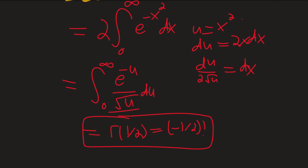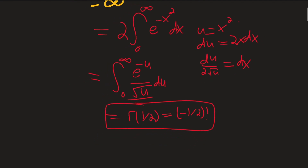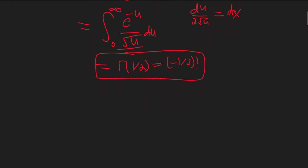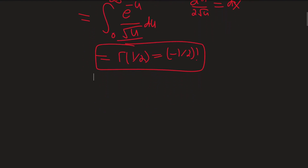But for now let's focus on this integral: the integral from zero to infinity of e to the minus u over the square root of u, du. The way we're going to evaluate this is through some good old complex analysis, and the contour we're going to be using today is the keyhole contour.